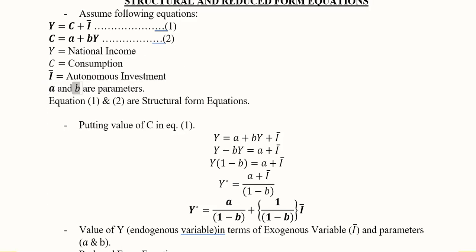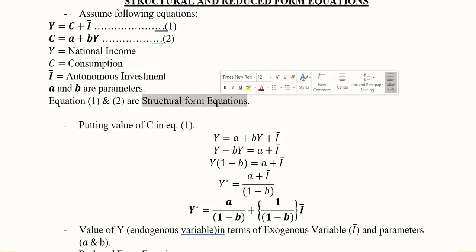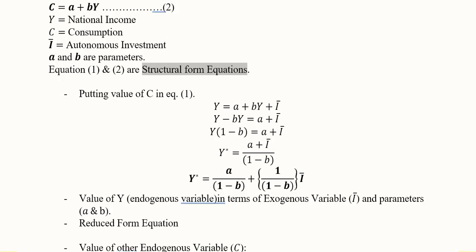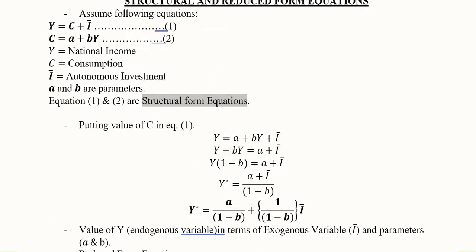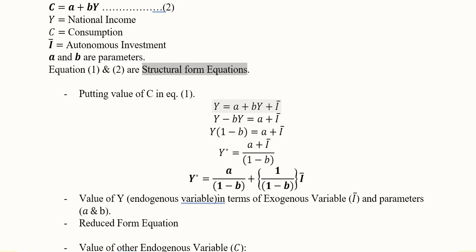A and B are the structural parameters. What we can do is use these two equations, that is equation 1 and 2, these structural equations, in order to get the reduced form equations. For that we can easily substitute this value of C here.